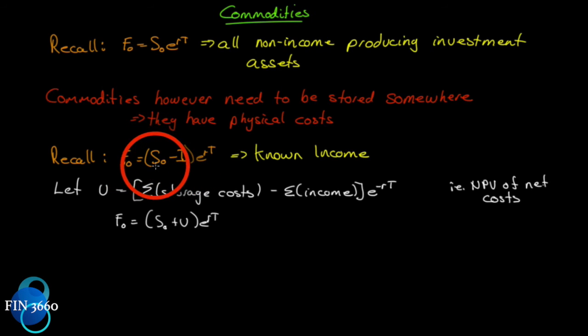Income lowers our futures price because it'll be deducted from the spot price. But the storage costs we have to pay - we have to pay for the spot asset and we have to pay for the storage costs. So that's a full cost altogether, carried at the risk-free interest rate for the period of time, which will tend to push up the futures price.